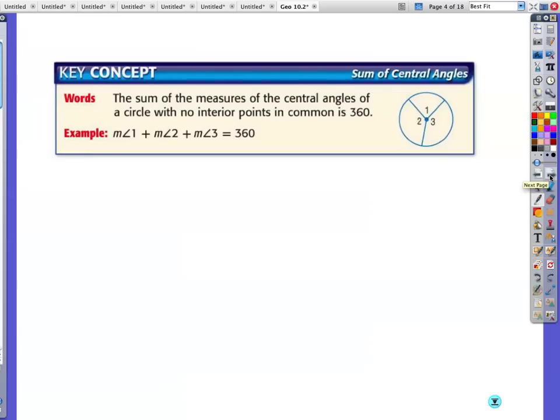The sum of the measures of the central angles of a circle with no interior points in common is 360 degrees. So all I need you to write down is basically this. And there could be four, five, six, seven different little sections, pieces of the pie I guess you could say, or pieces of the pizza. And they all add up to 360.